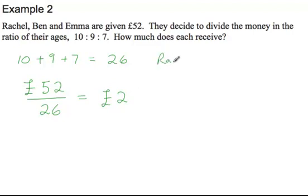So Rachel. Well, she's the oldest. She's 10, so she's going to take home 10 parts. So 10 times 2 pounds per part. That gives her a total of 20 pounds.